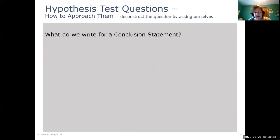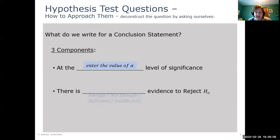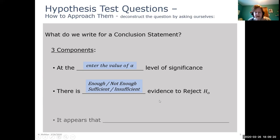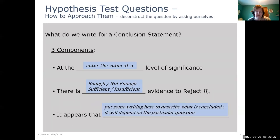And then finally, what would we write for a conclusion statement? So just like a confidence interval statement, there's going to be three components of a good conclusion statement. At some level of significance, so here we'd put our value of alpha that we were either given or chosen. There is either enough or not enough evidence to reject H0. And different terminology for enough and not enough, you could say sufficient or insufficient. And then it appears that, and this is where we would have to have some writing here to describe what is being concluded. And that's going to depend on the particular question.